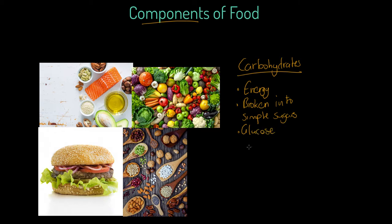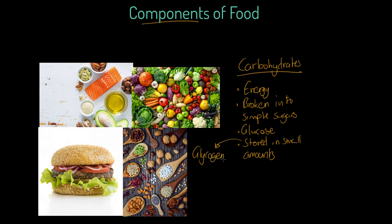Carbohydrates are a source of glucose. They are also stored in small amounts — we store carbohydrates in the form of glycogen, which is stored in both the liver and in muscle tissue. This is a limited source, about two hours' worth of energy. The sugars we derive from carbohydrates can be used in both anaerobic and aerobic processes, because they are broken down to form glucose.